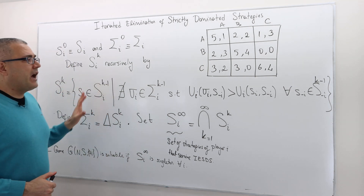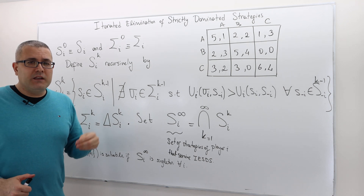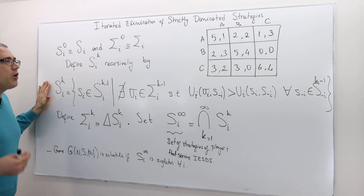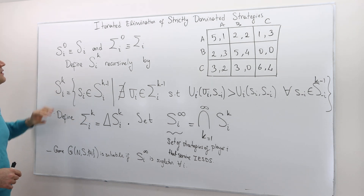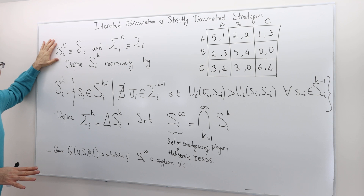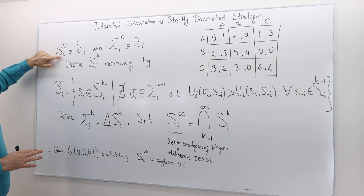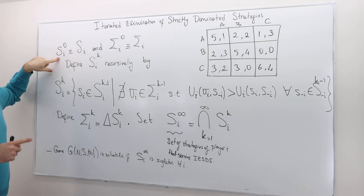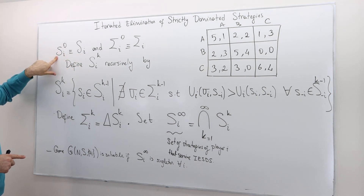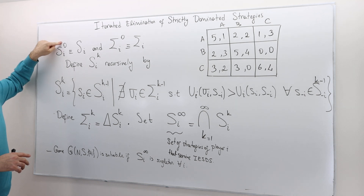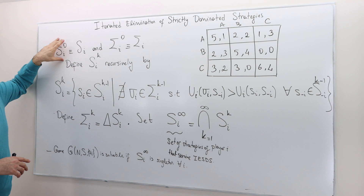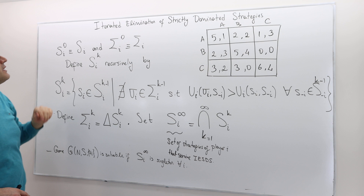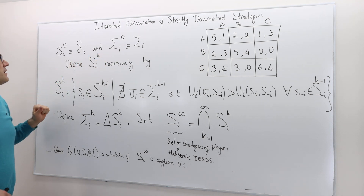Let's formally define iterated elimination of strictly dominated strategies. This process is a recursive process. We start at iteration number zero. Each player has a strategy set S_i, and in iteration zero, I'm going to define a set S_i^0 — the iteration-zero strategy space for player i — which is the full mixed strategy set.